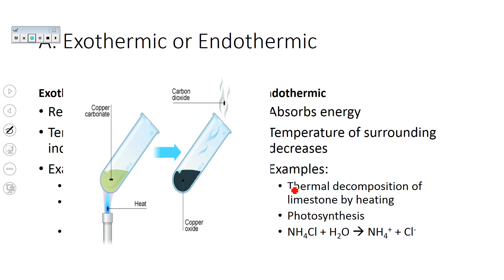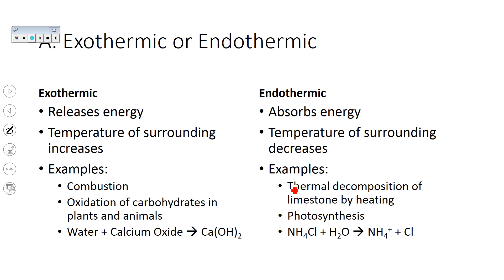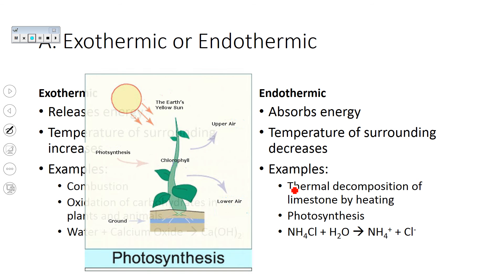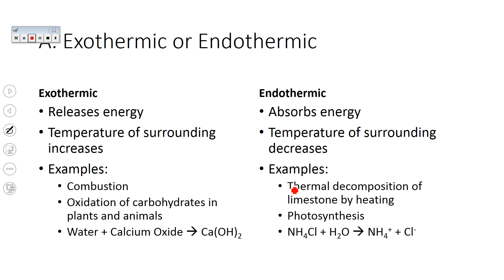Endothermic reactions absorb energy, so the temperature of the surroundings gets colder — you'll see a decrease in temperature. Examples of endothermic reactions are the thermal decomposition of limestone by heating — any time you have to heat something up, that's endothermic — photosynthesis, which requires the input of sunlight, and ammonium chloride plus water. If you did that experiment, you would feel that the surroundings had a decrease in temperature.